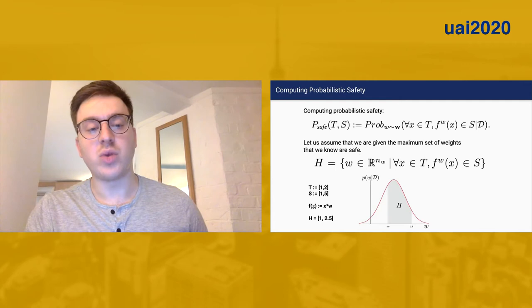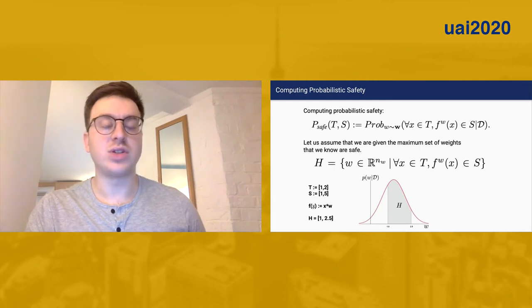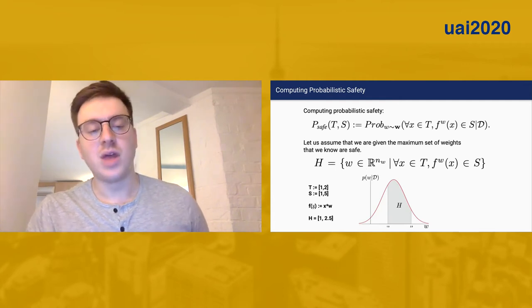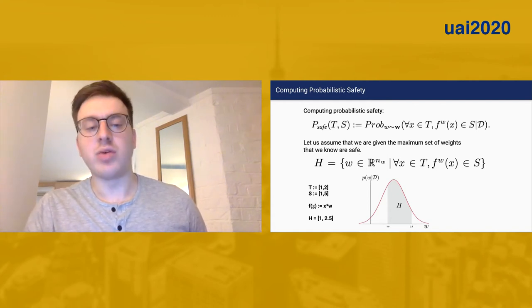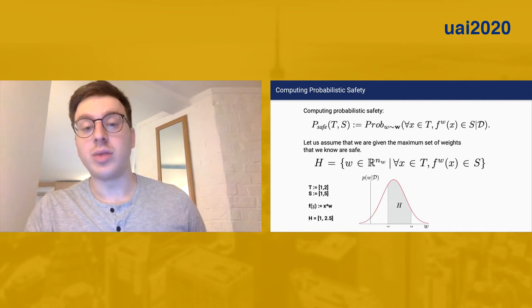Let's say we have the property that for any input between one and two, we want the output of this function to be between one and five. It's quite clear that the safe weights are between one and two and a half.